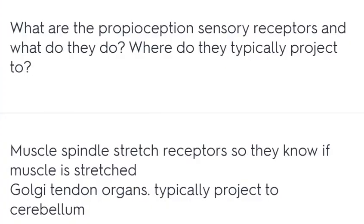What are the proprioception sensory receptors and what do they do, and where do they typically project to? Muscle spindle stretch receptors detect if a muscle is stretched; Golgi tendon organs typically project to the cerebellum.